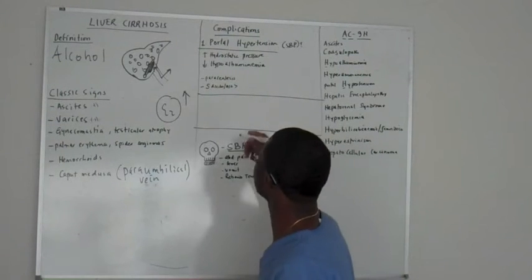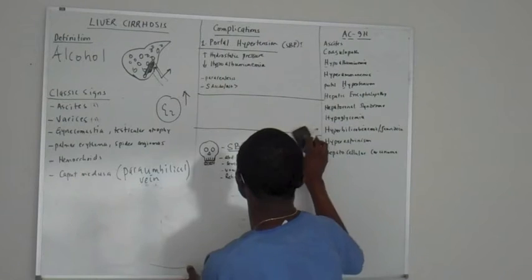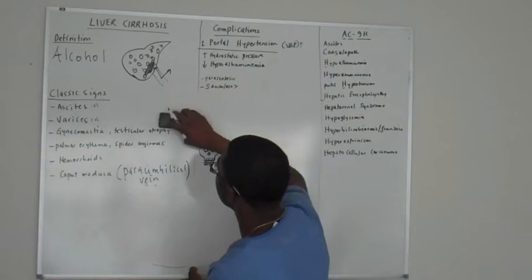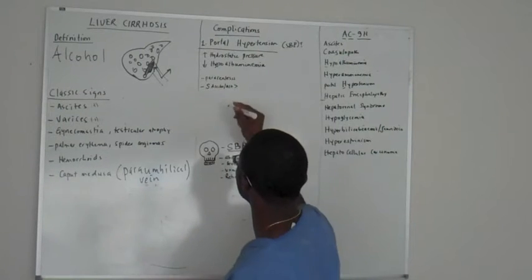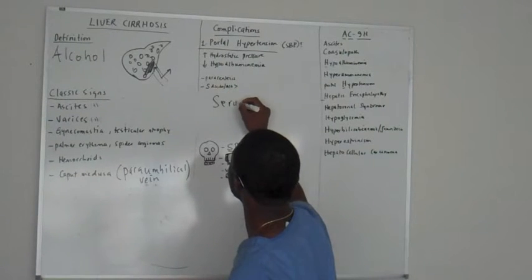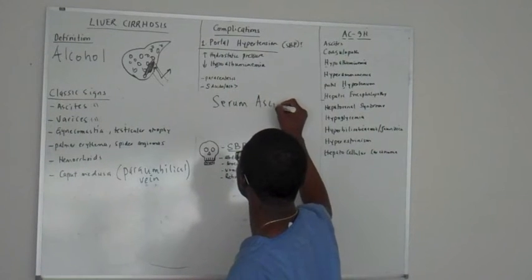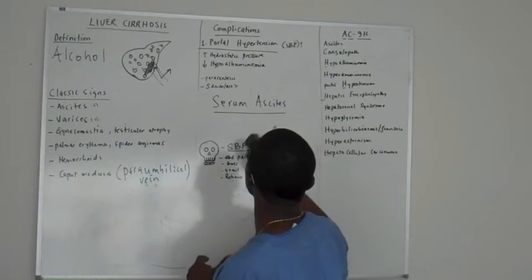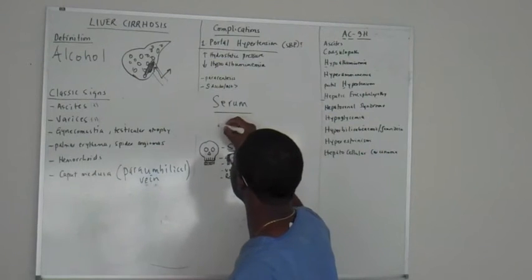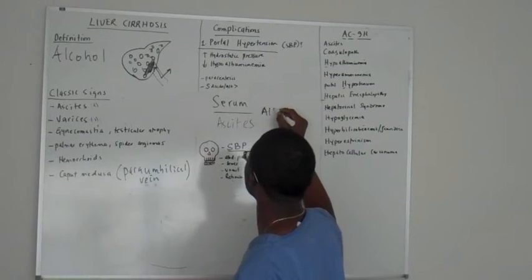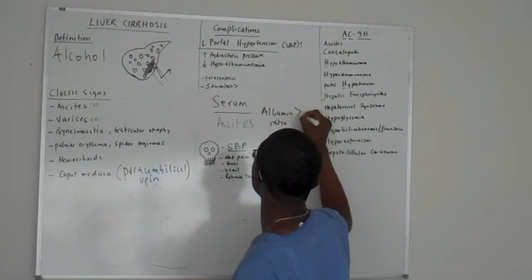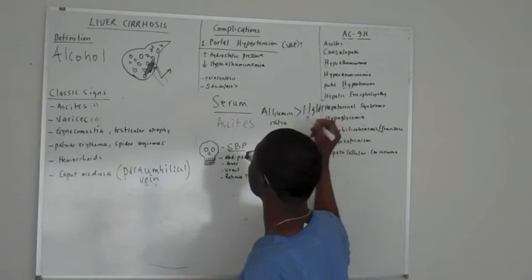How do you do that? You get your serum — I'm going to erase this, running out of space. Serum ascites over ascites. I kind of like to make it look like a formula. Albumin ratio.